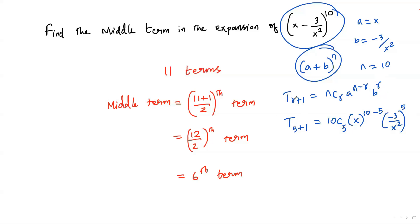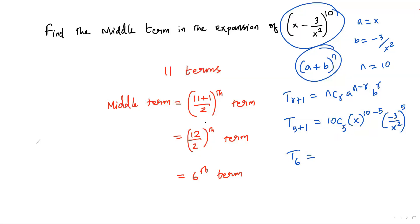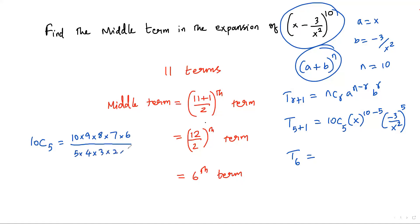To find the 6th term, plug in r = 5 so T(5+1) becomes T6. Now we calculate 10C5: it equals (10 × 9 × 8 × 7 × 6) / 5!, which is (10 × 9 × 8 × 7 × 6) / (5 × 4 × 3 × 2 × 1). After cancellation — 6 cancels with 3×2, 5 cancels with 10 giving 2, 4 cancels with 8 giving 2 — we get 2 × 9 × 2 × 7 = 252. So 10C5 = 252.